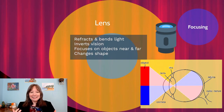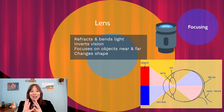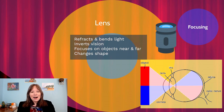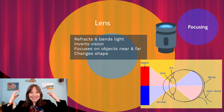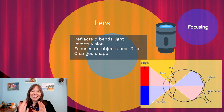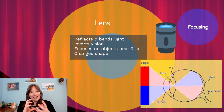After the pupil comes the lens. As light moves through the pupil, it hits this fascinating part of the eye that can change shape to focus on near or far objects. The lens refracts and bends light, and fascinatingly, it actually inverts our vision — the top of your visual field hits the bottom of the back of your eye, and the bottom of your visual field hits the top. The lens flips everything.